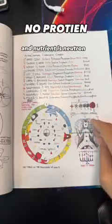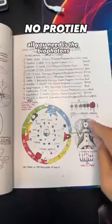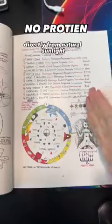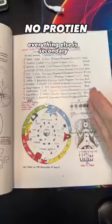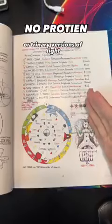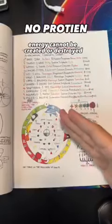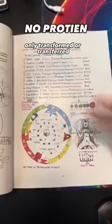Protein is proton, and nutrient is neutron. All you need is the biophotons directly from natural sunlight. Everything else is secondary or trinary versions of light. Energy cannot be created or destroyed, only transformed or transferred.